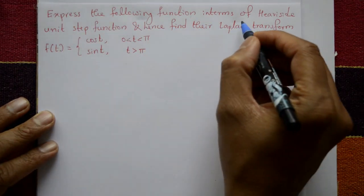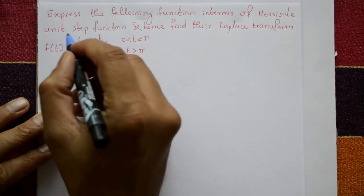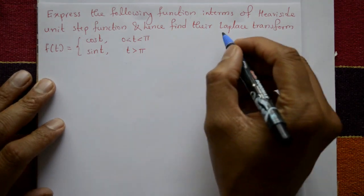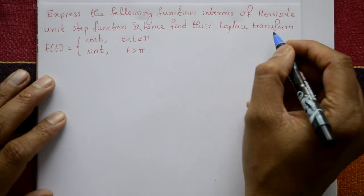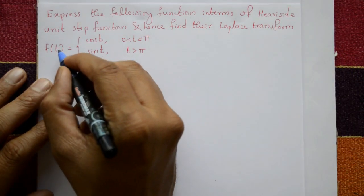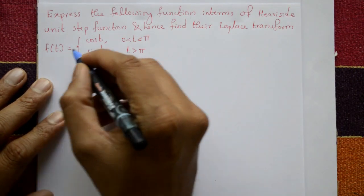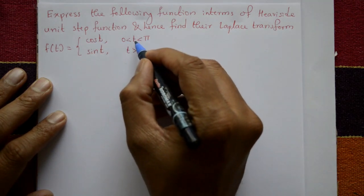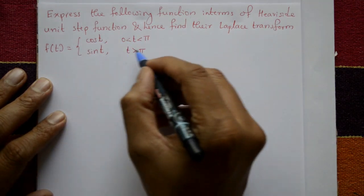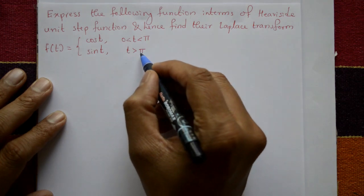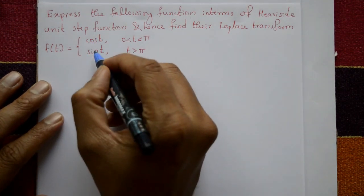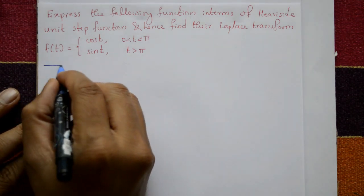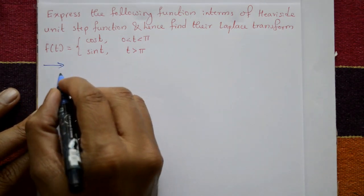Express the following function in terms of a unit step function and hence find the Laplace transform. Given f(t) equals cos(t) for 0 < t < π, and f(t) equals sin(t) for t > π.